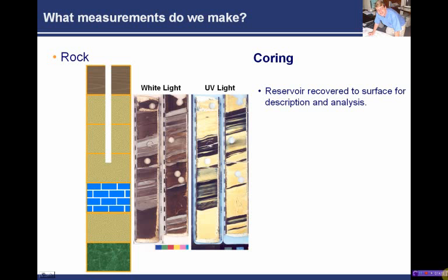Here is the same piece of core. These images on the left-hand side are under normal white light, and you can see that this rock is actually sandstone — it's stained dark with black oil — and these rocks here are the mud rocks. You can see that the oil stays between the mud rocks and the reservoir. Here is exactly the same interval of rock laid out on a table with a photograph under UV, ultraviolet light.